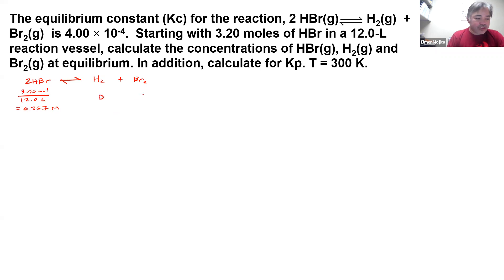Don't have anything at the beginning, and you subtract it by 2x because there's 2 HBr, and you have plus x here and plus x here. So at equilibrium, 0.267 minus 2x, and then you have x and x.